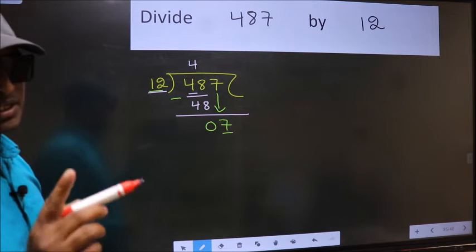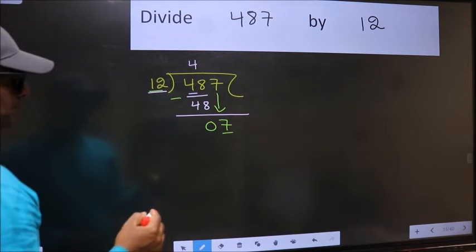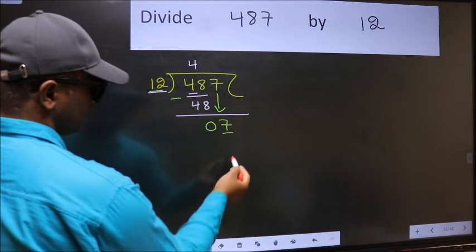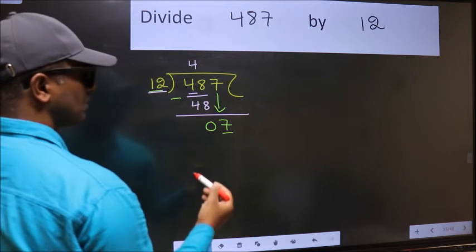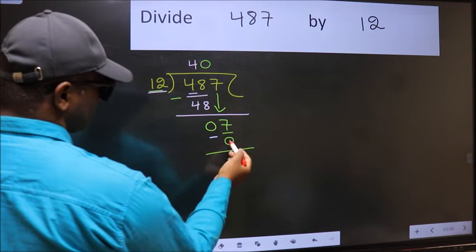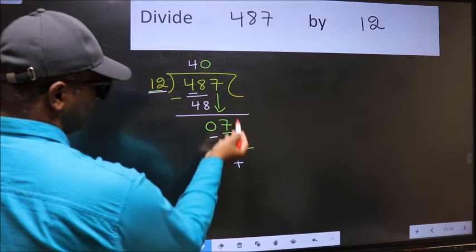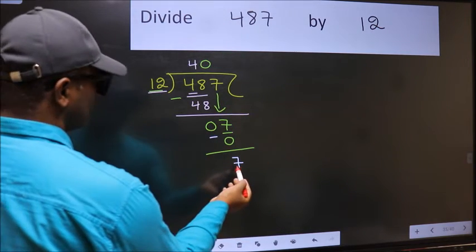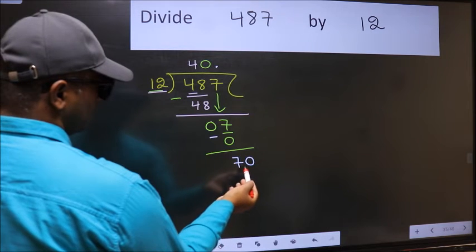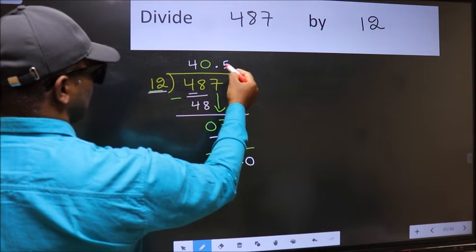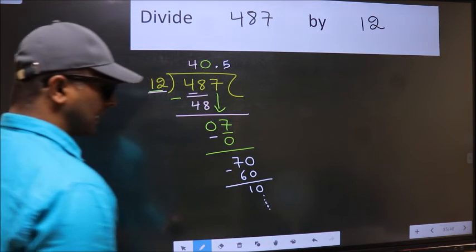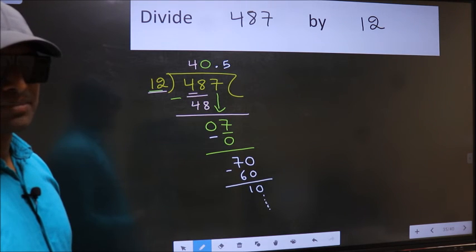Instead, think about which number to place here. If we take 1, we get 12, but 12 is larger than 7. So we take 0: 12 times 0 is 0. Subtract: 7 minus 0 is 7. We did not bring any number down, and 7 is still smaller than 12, so now you can put a dot and take 0, giving 70. A number close to 70 in the 12 times table is 12 times 5 equals 60. Subtract to get 10, then continue the division.